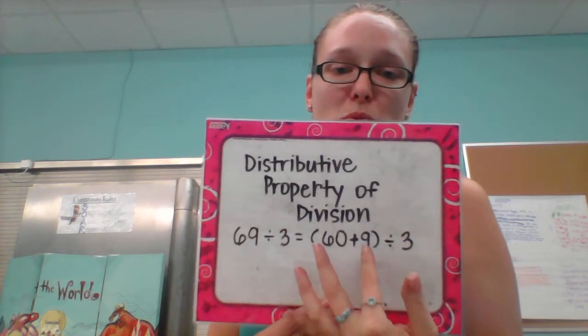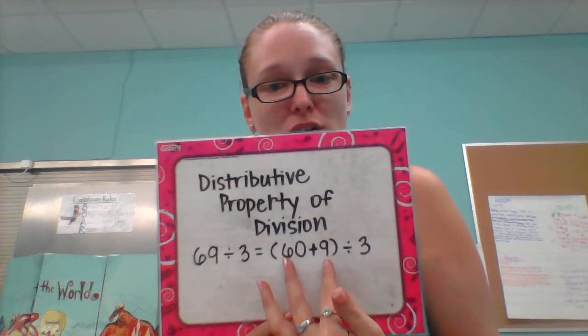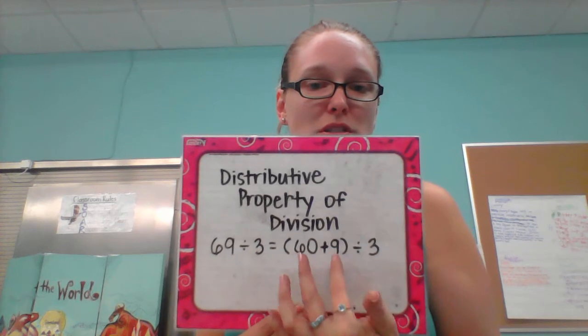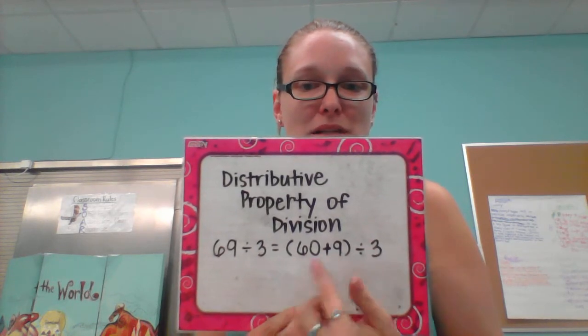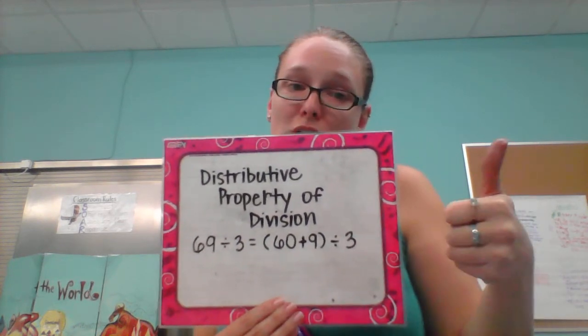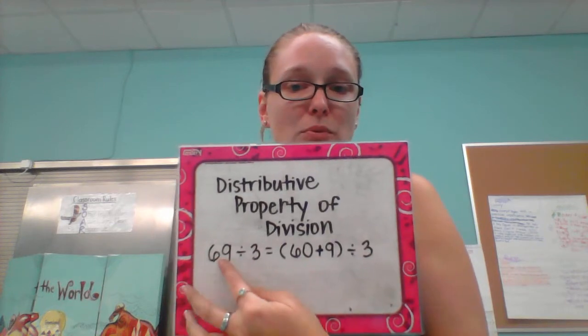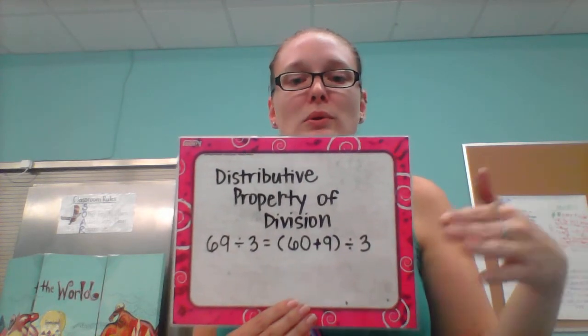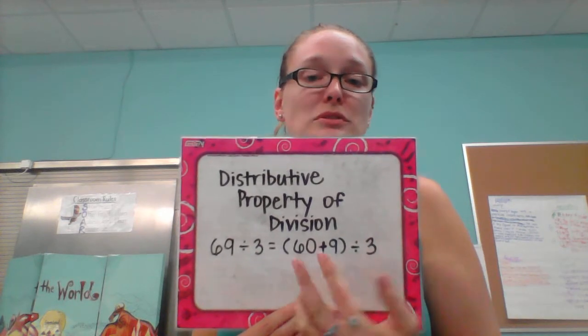So basically, while we've been doing multiplication, we're breaking apart into two different chunks. We're doing the same thing because it works for division too. As long as you make two addends and 60 plus 9 equals 69, you're good. It's just that these two addends have to equal the dividend. It's kind of like what we've been doing with the area model, only we're breaking it up into division problems.